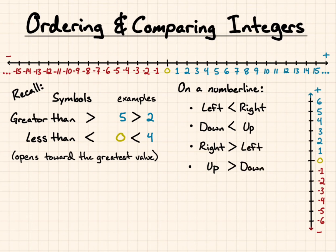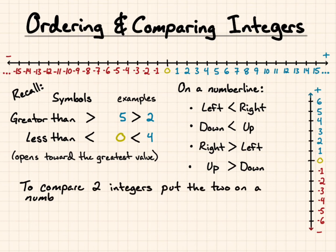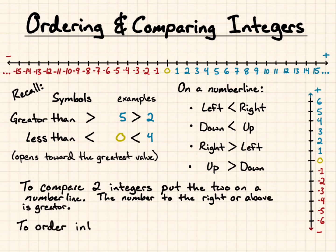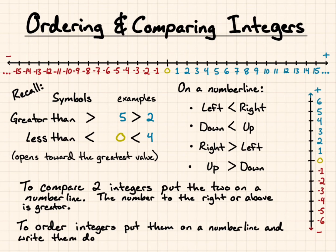Let's talk about how to compare. To compare two integers, put the two on a number line — the number to the right or above is greater. To order integers, put them on a number line and write them down from left to right, which is least to greatest.